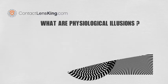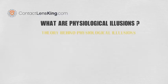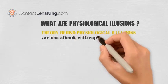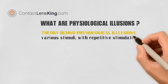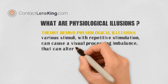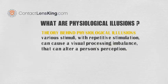The theory behind physiological illusions suggests that various stimuli, with repetitive stimulation, can cause a visual processing imbalance that can alter a person's perception.